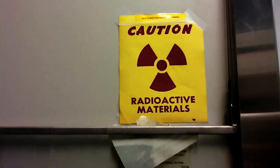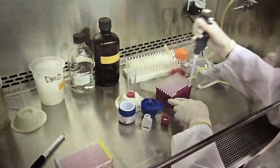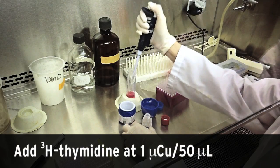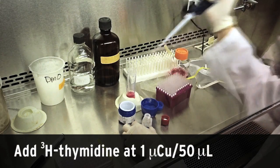cells are labeled with tritiated thymidine incorporated into DNA. Tritiated thymidine is added to media at a concentration of 1 microcurie per 50 microliters.